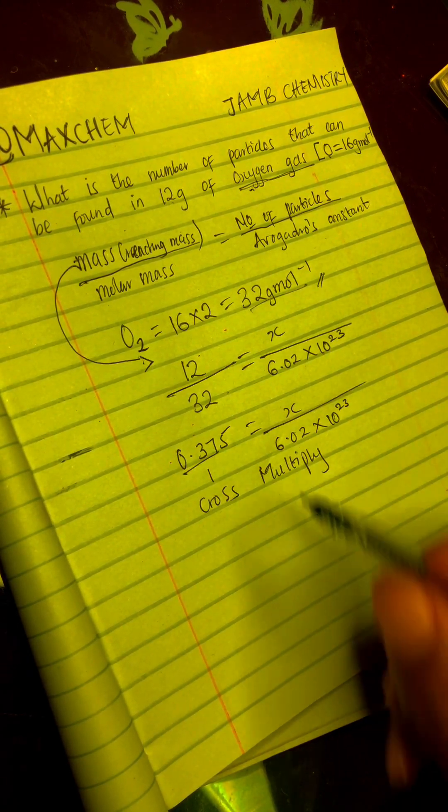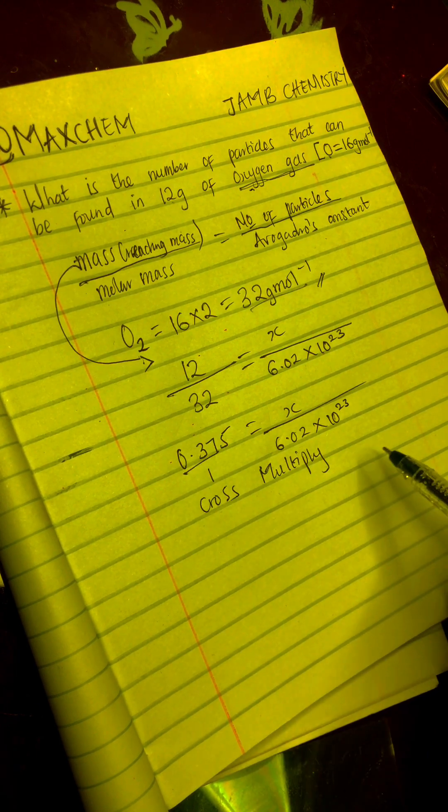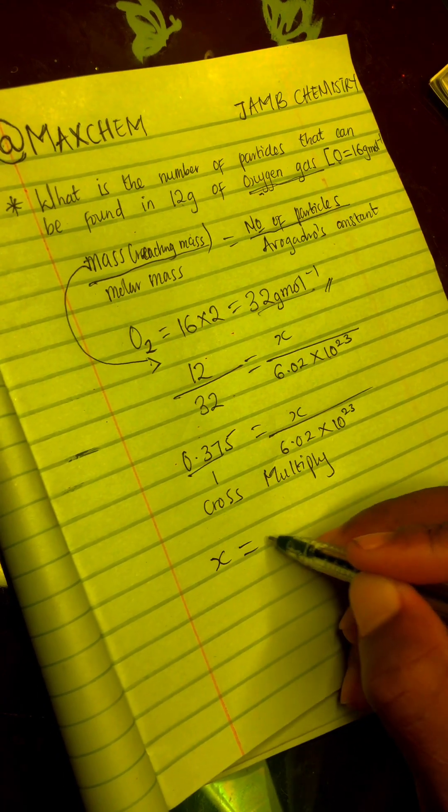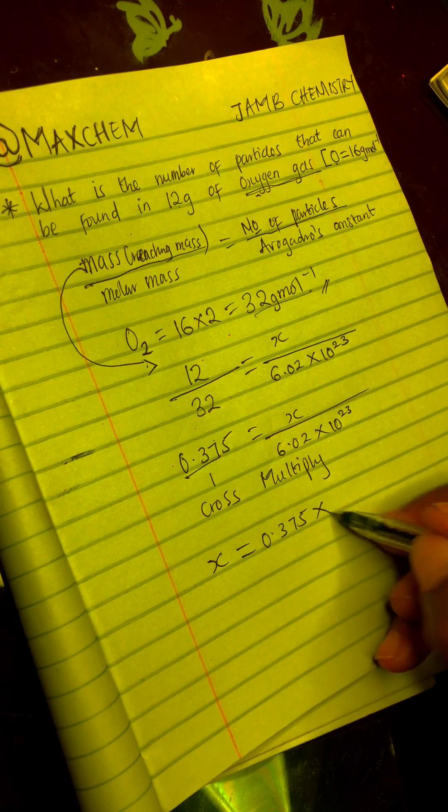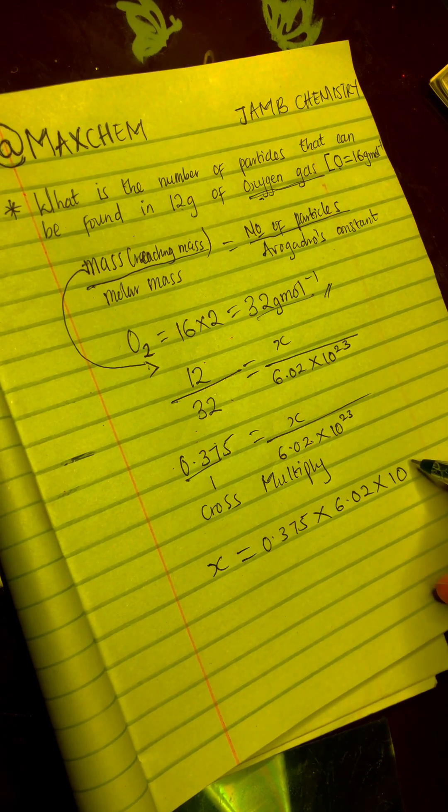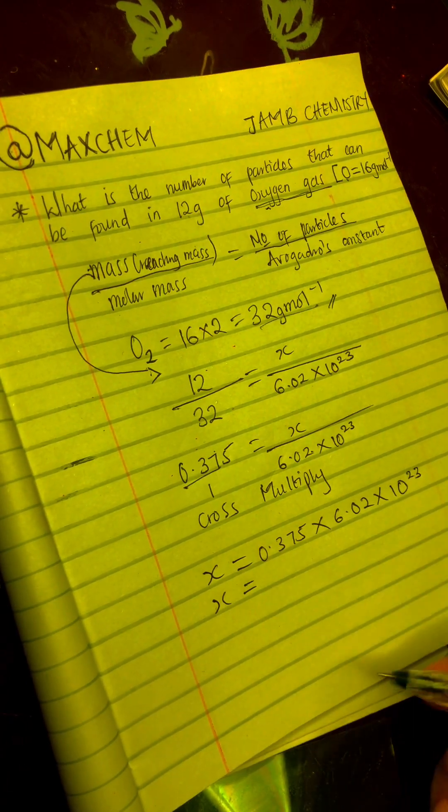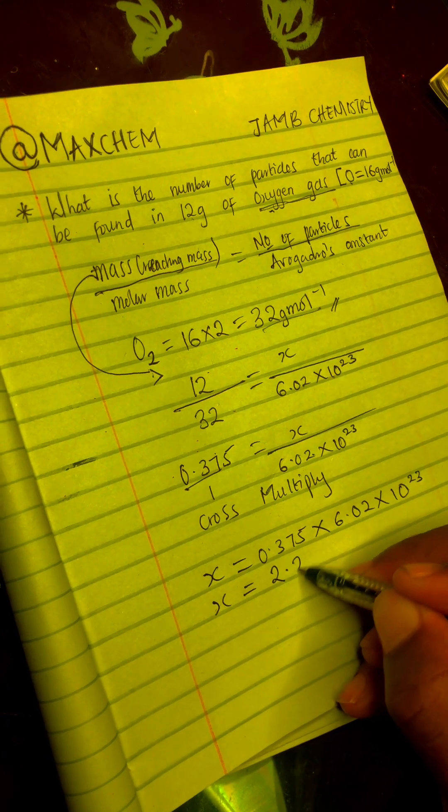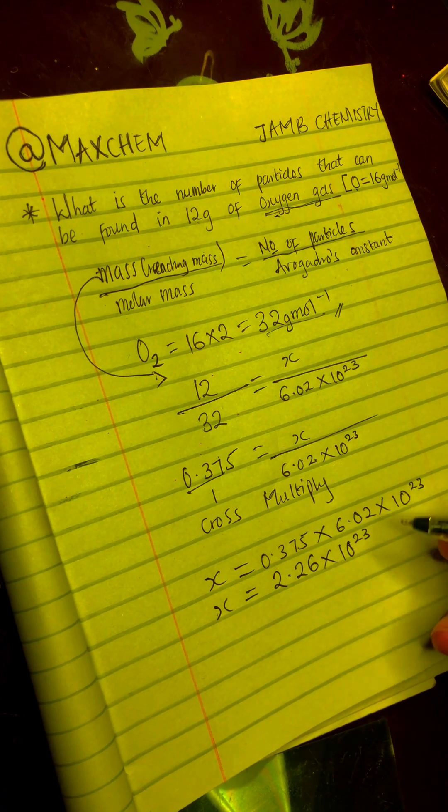X is going to be multiplied by 1 while you are going to have 0.375 times 6.02 times 10 raised to the power of 23. So X is equal to 0.375 times 6.02 times 10 raised to the power of 23. You can punch your calculator. Punching calculator, that should give you 2.26 times 10 raised to the power of 23.